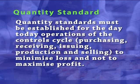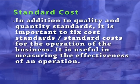Quantity standard. Quantity standards must be established for the day-to-day operations of the control cycle — purchasing, receiving, issuing, production and selling — to minimize loss and not to maximize profit. Standard cost. In addition to quality and quantity standards, it is important to fix cost standards or standard costs for the operation of the business. It is useful in measuring the effectiveness of an operation. With the comparison of standard costs and actual performance costs, the effective use of food raw materials can be assessed. Cost standards are necessary in the cost control process because they provide a means of comparing what we are doing with what we should be doing.